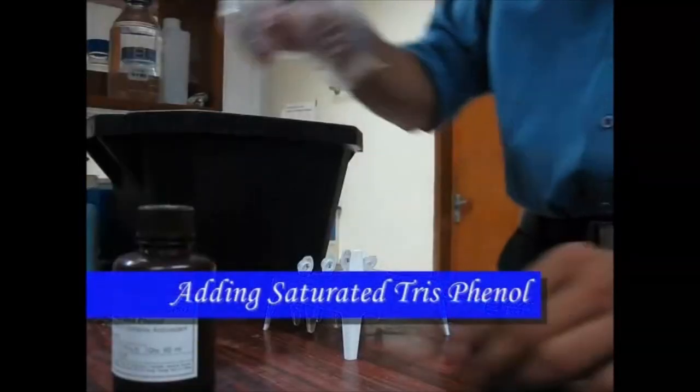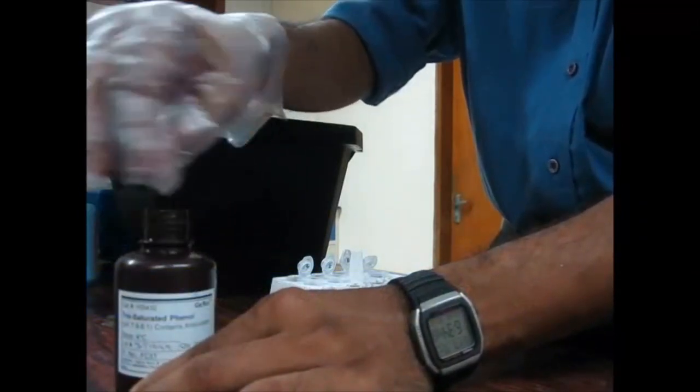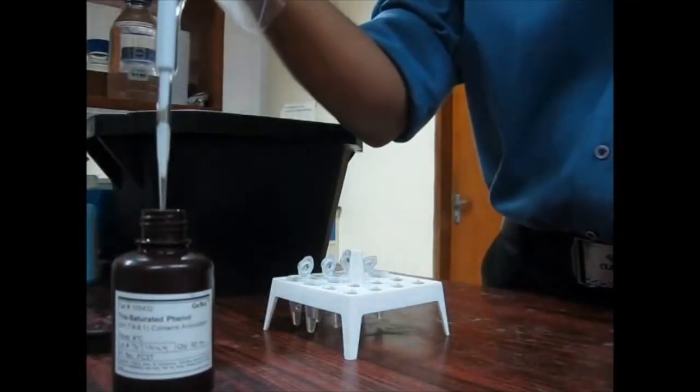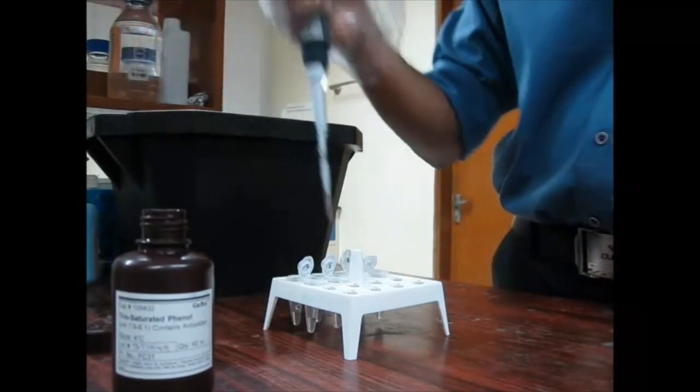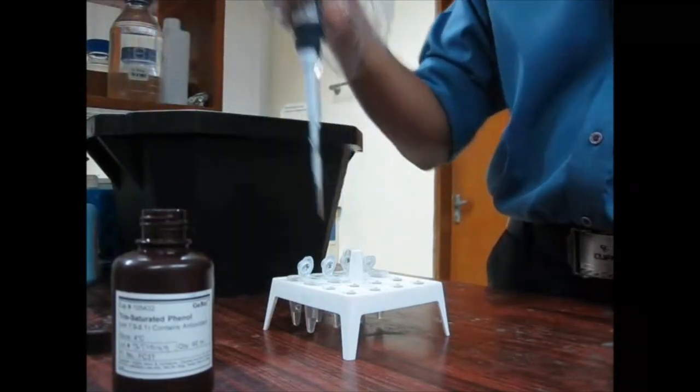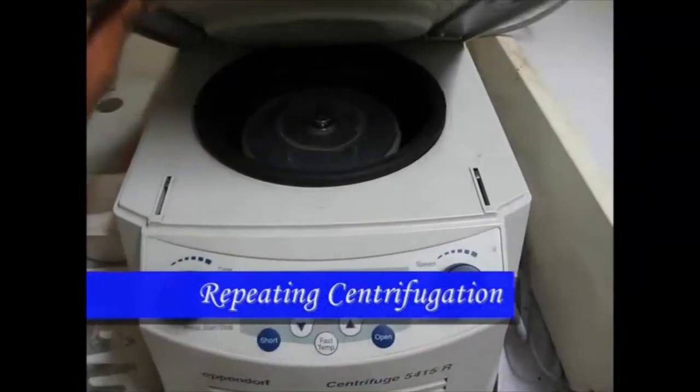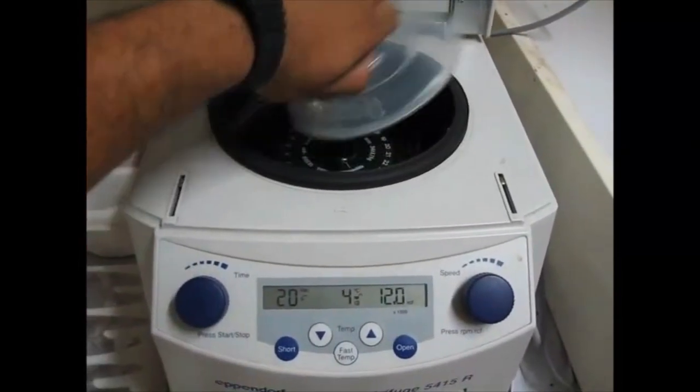Adding saturated tris-phenol helps in protein purification. It is actually saturated phenol with tris-HCl. Again the centrifugation is repeated at 12,000 rpm for 20 minutes maintaining 4 degree Celsius temperature.